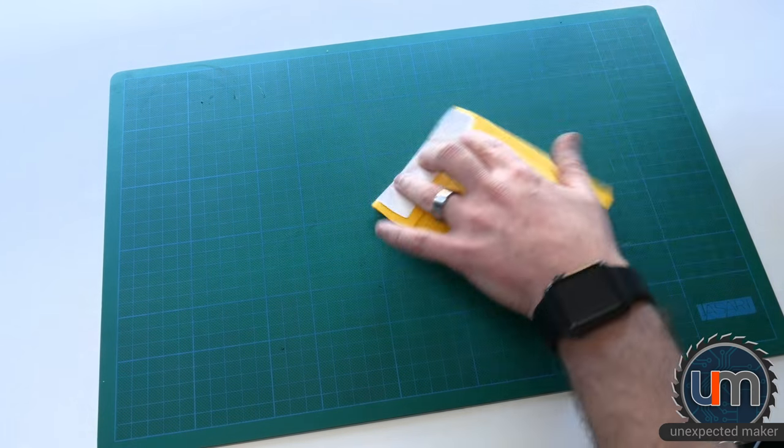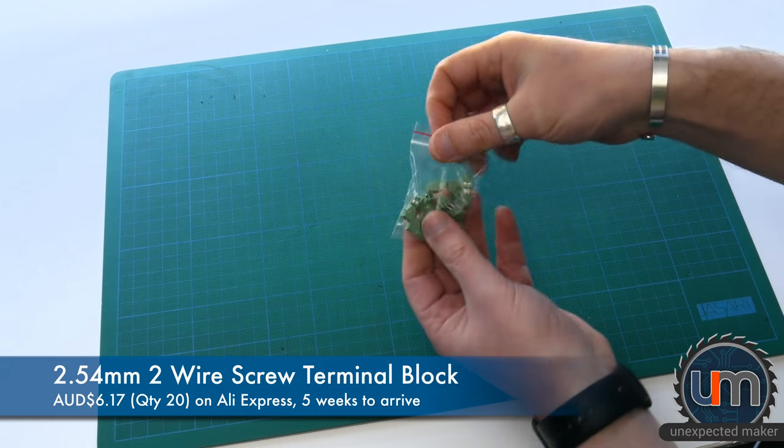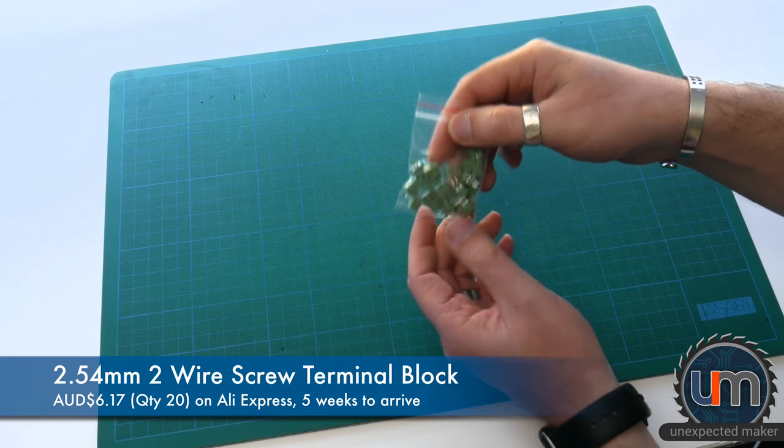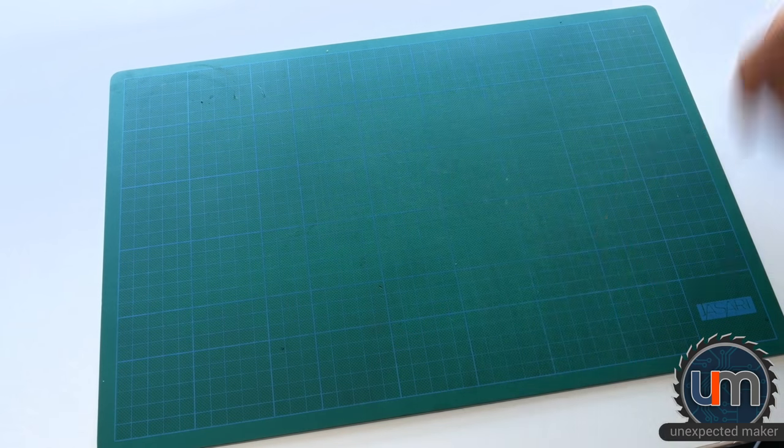Next, we have terminals. I know what these are. They are 2.54mm screw terminals. These are for my Reflow Masters. So there's five on each board and I only ordered 20 last time. So I've got some more.